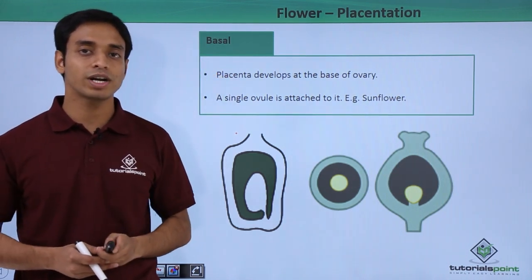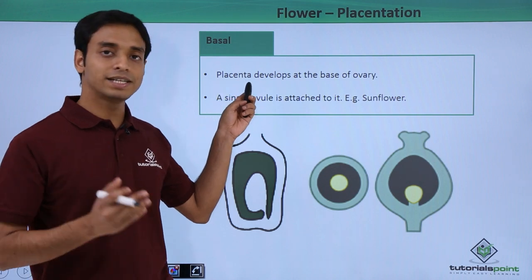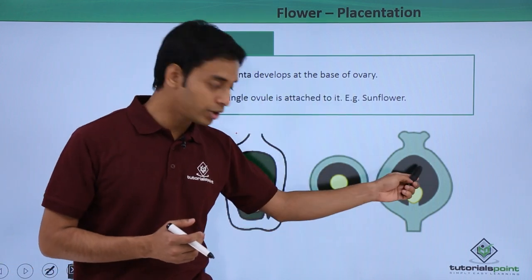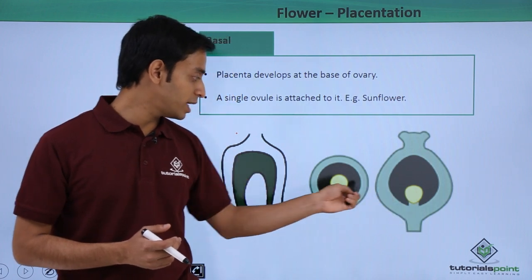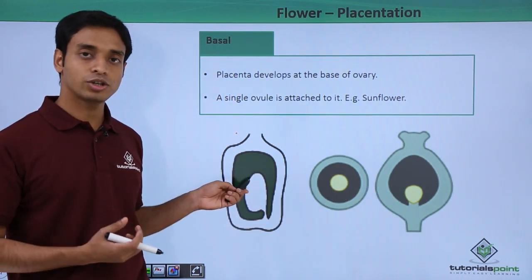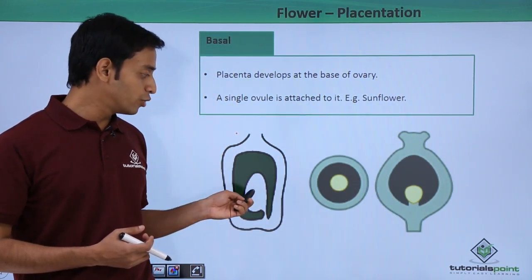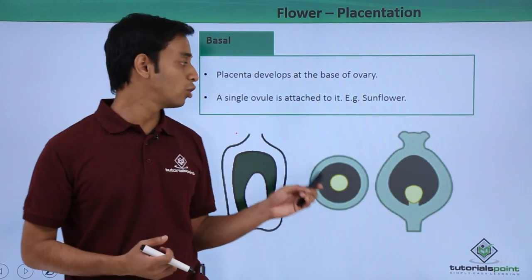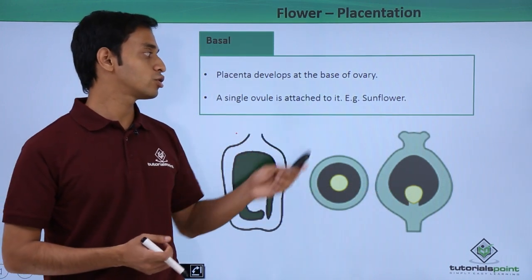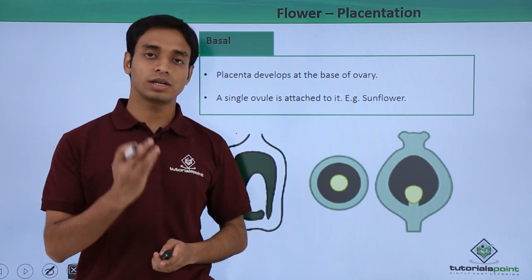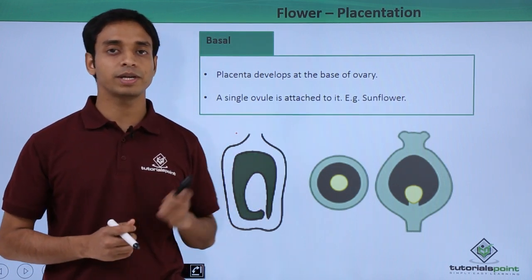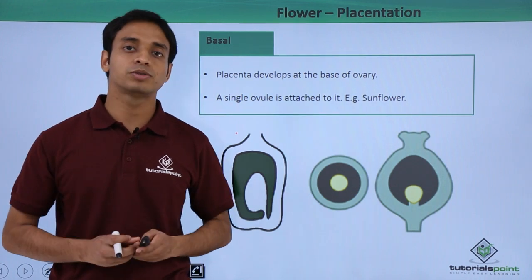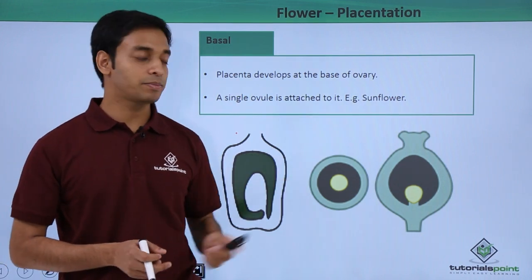The last type is basal placentation. Here the placenta develops at the base of the ovary, and the ovule is born at the base. Only a single ovule is attached, unlike the previous types where multiple ovules can be found. A good example is sunflower.